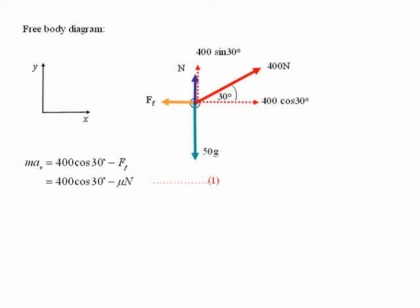Using Newton's second law, the mass times the acceleration in the x-direction equals the resultant force in the x-direction. Looking at the free body diagram, you can see that the resultant force is 400 cos 30 degrees minus the friction force.